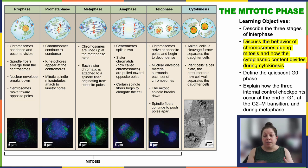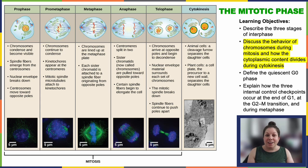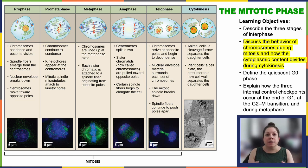The mitotic spindles start to break down since they're no longer needed, but the tubulin used to make them is recycled. We then start reassembling the cytoskeleton for our new daughter cells.